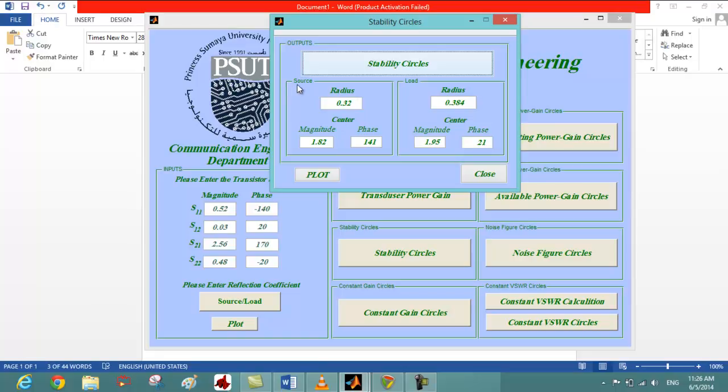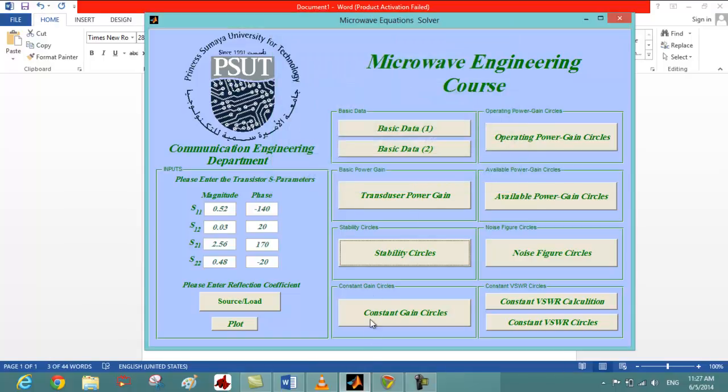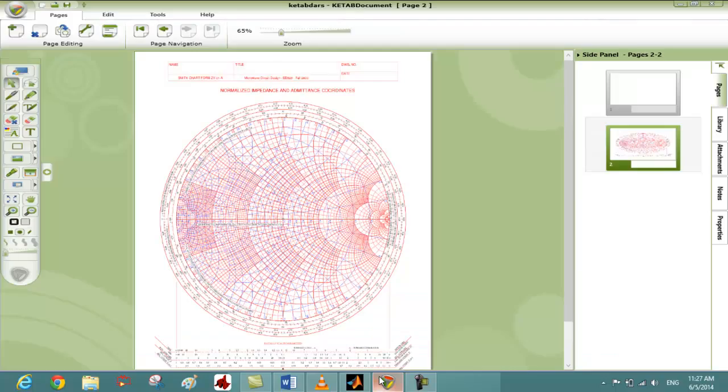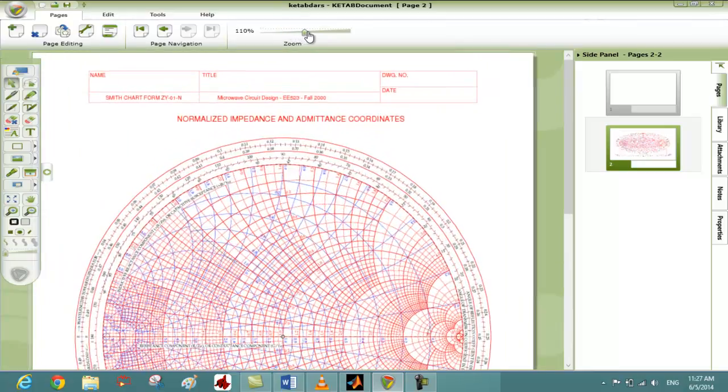The radius of the load and the center, which has the magnitude and the phase of the load. We note those values, and then we close it, we open the Kitab program, and we import a Smith chart as PDF.